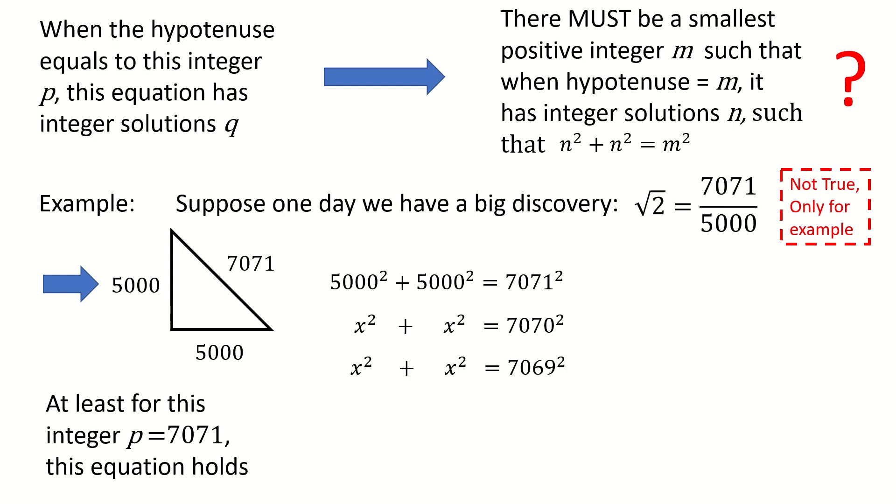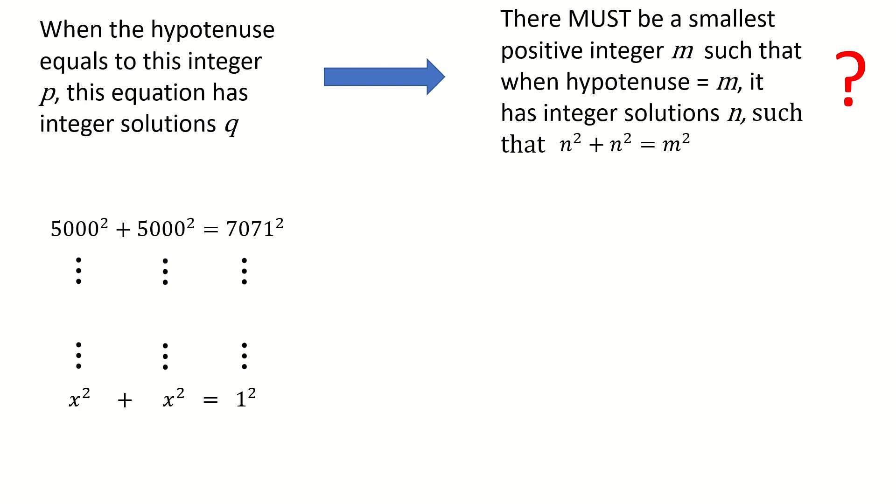Next, we try 7069 to see if we can find integer solutions for x. Keep going until we count down to 1. After we've done the whole process, we want to see if we can find other smaller integer solutions for this equation. So we have two possibilities.